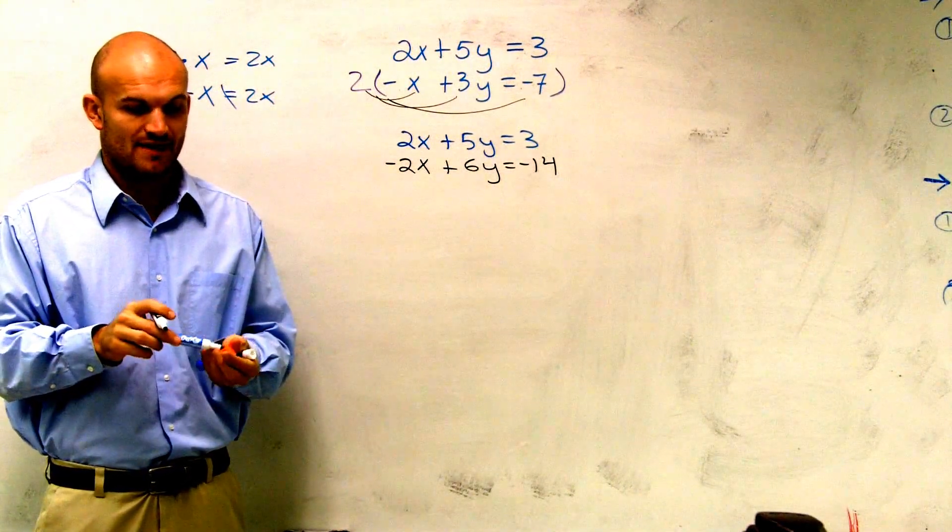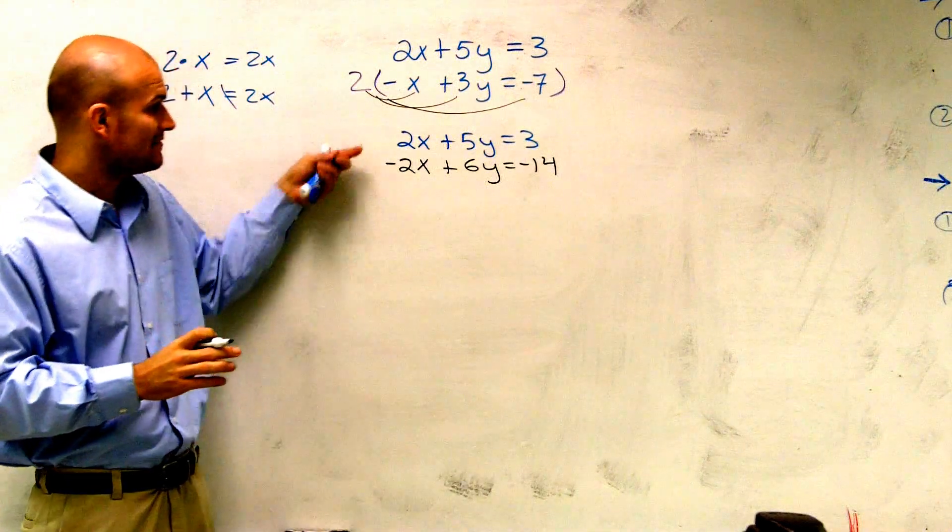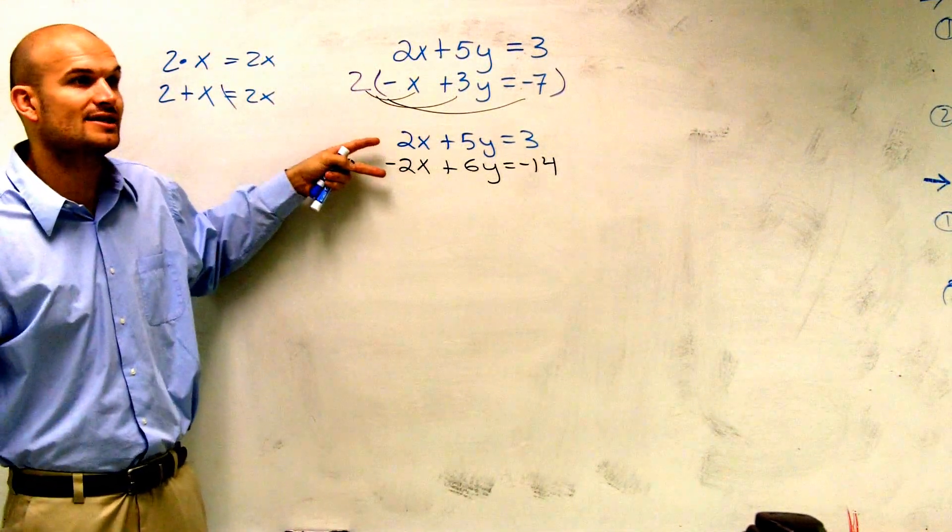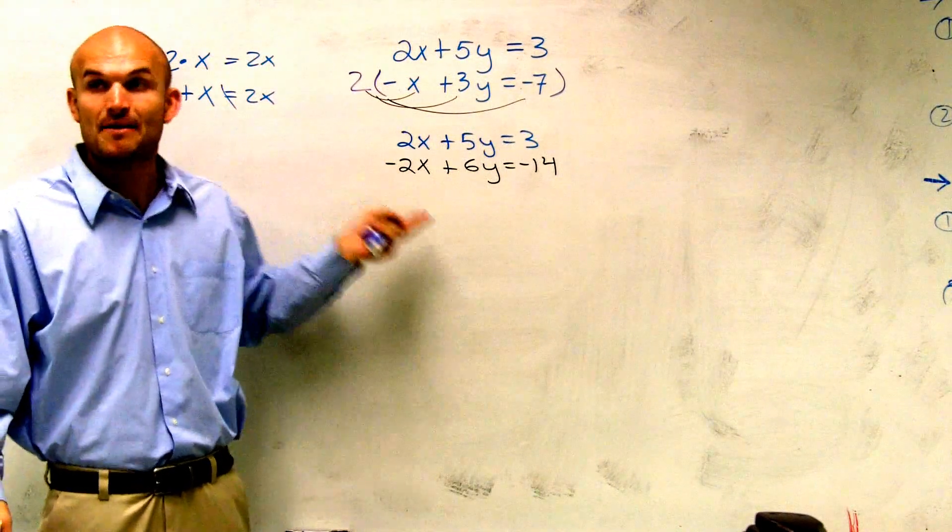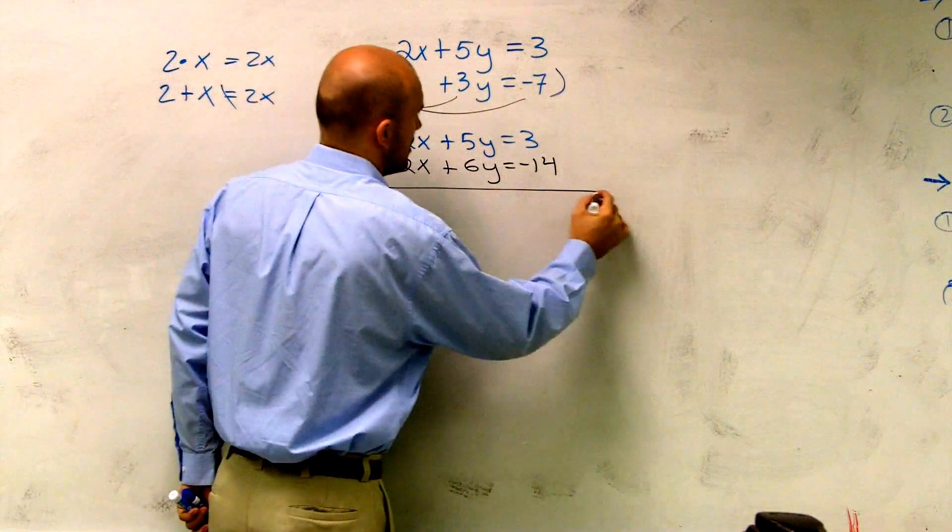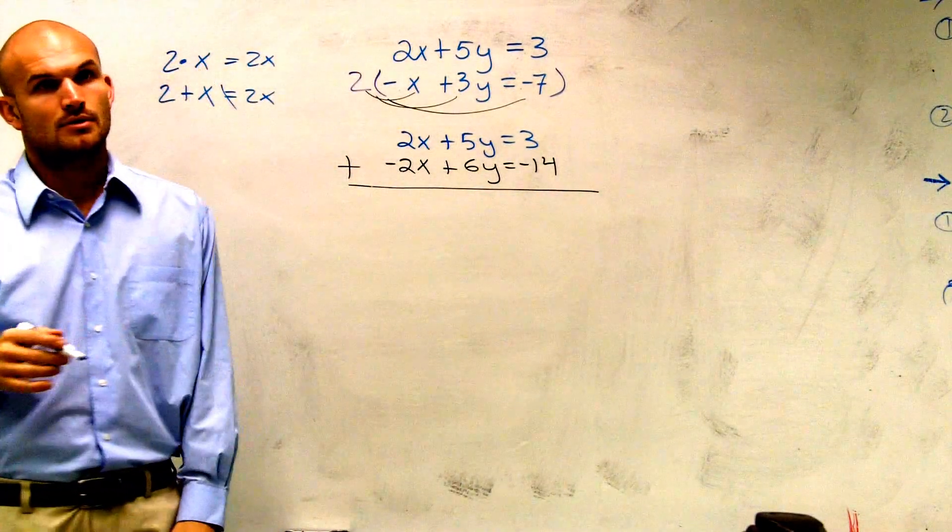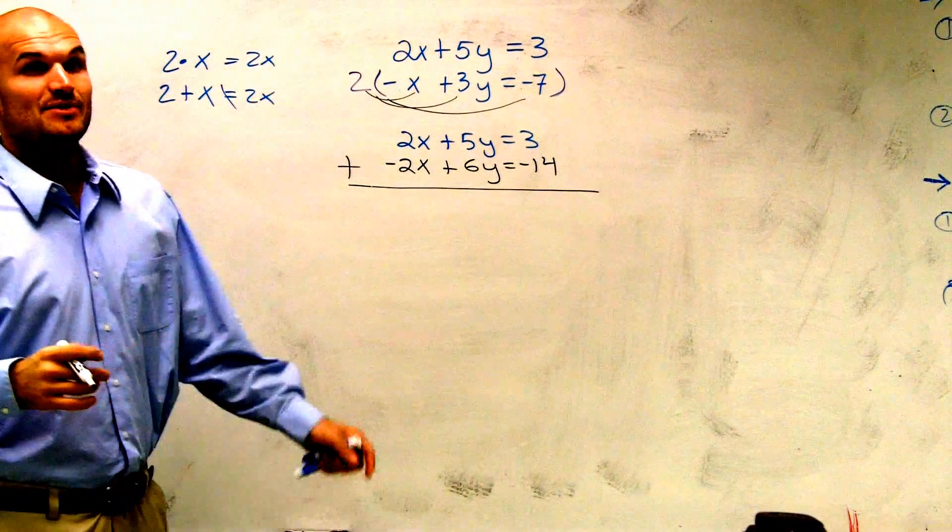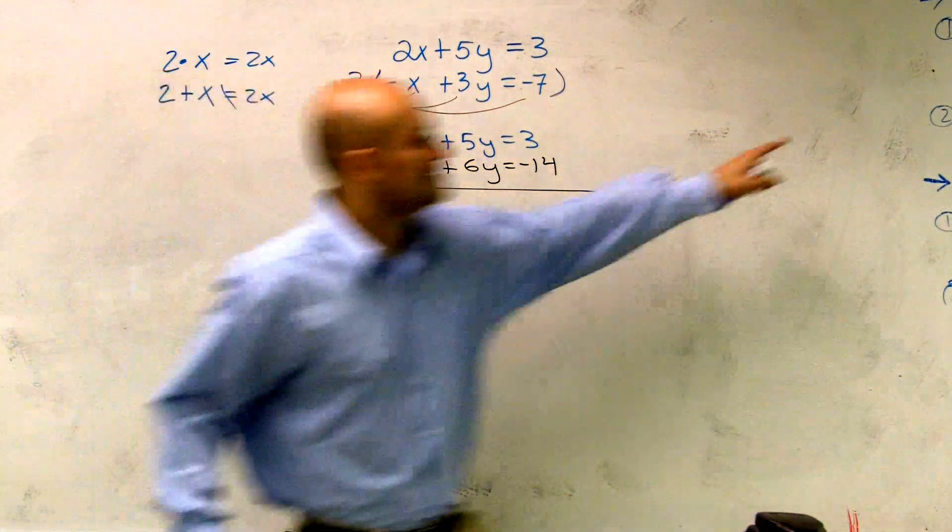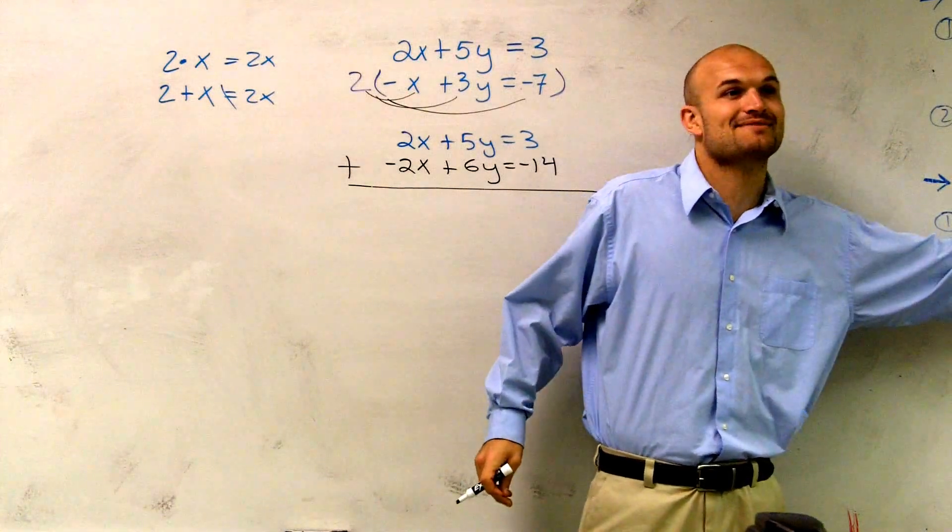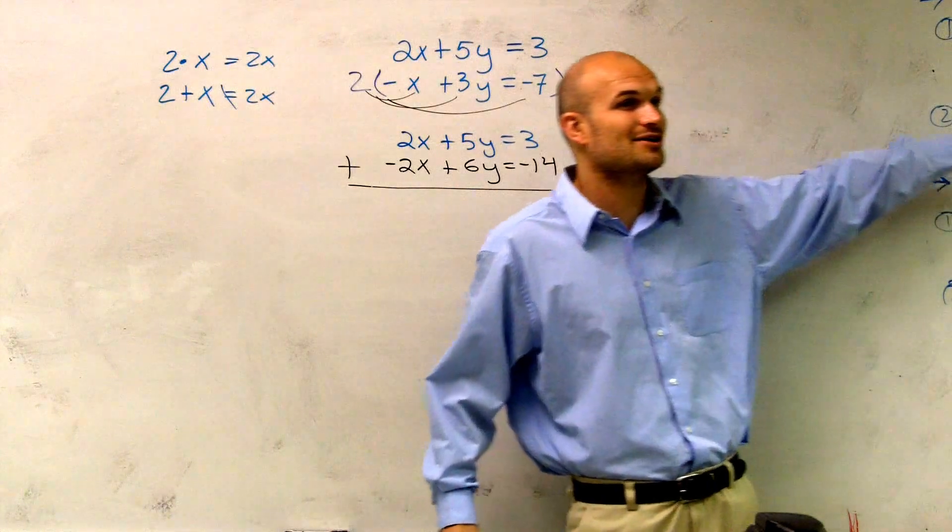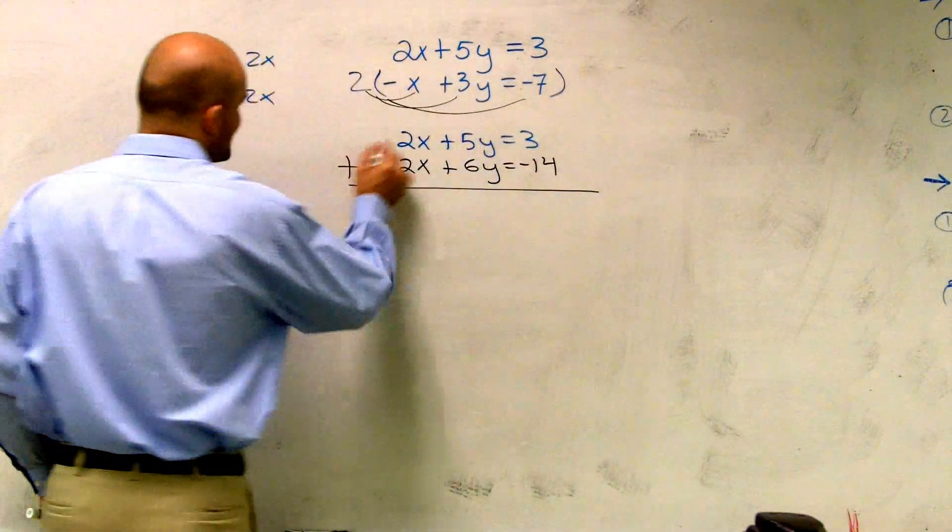Now, why is it so special to have that new equation? Because now, do I have the same number in front? Yeah, now I have the same number in front. Now I just need to look at, do they have the same sign, or do they have opposite signs? Well, since they have opposite signs, I'm going to use elimination by addition or subtraction. Remember, the same number with opposite signs you want to do? Opposite sign you want to do addition. So all I want to do is add them up.